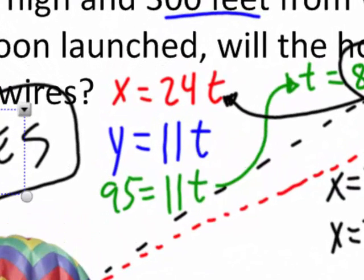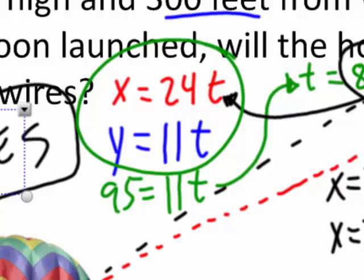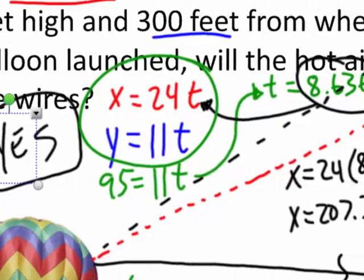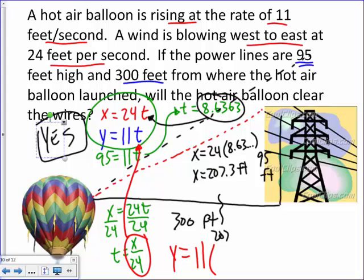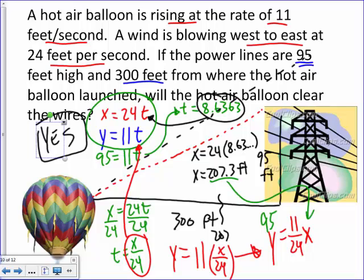Could I make this into one equation? Could I combine those two? Yeah. I could solve that horizontal for T. For example, right down here, I could go divide by 24, divide by 24, and T would equal X over 24, and now I could plug that in for T of the vertical and say Y equals 11 times X over 24, which technically is the same thing as Y equals 11/24 X, which that was our slope, right? Up 11, right 24. So I could really use that and just simply plug in 95 for Y and see if I get something that's less than 300 for X, which I would have got the exact same thing, 207.3.